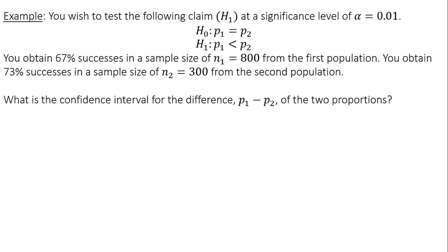In this example, which was in a previous video where we did the full hypothesis test, we want to test the claim at a significance level of α = 0.01. We obtained 67% successes in a sample size of n₁ = 800 for the first population, and 73% successes in a sample size of n₂ = 300 for the second population.